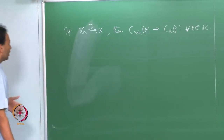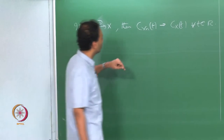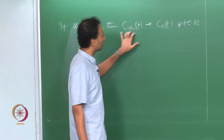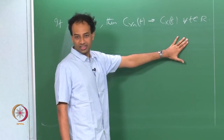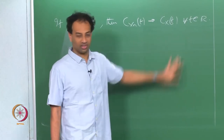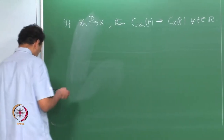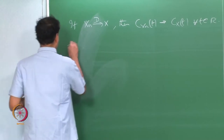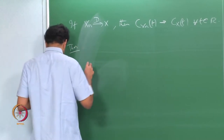Now we were talking about the opposite — the converse. If the sequence of characteristic functions converges to some limit, is it true that you have convergence in distribution? This is the result we were talking about, and it turns out — I will state this properly.